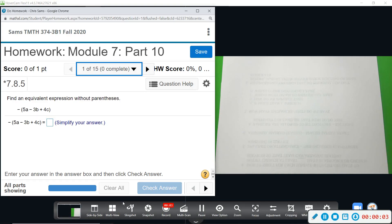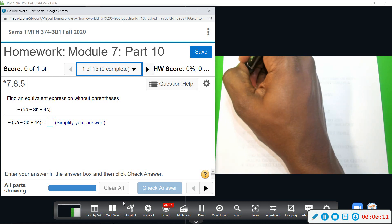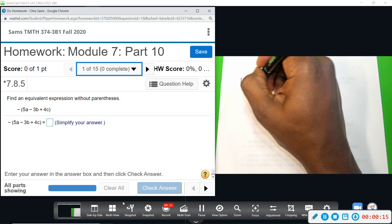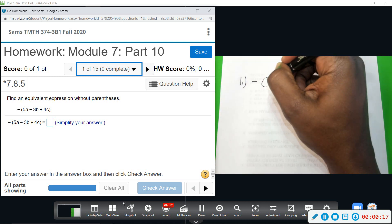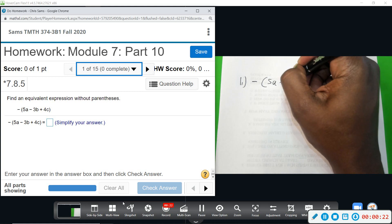All right, Module 7 Part 10. We want to find an equivalent expression without parentheses. What they want you to understand is that this negative on the outside of this 5a minus 3b plus 4c is acting as a negative 1.